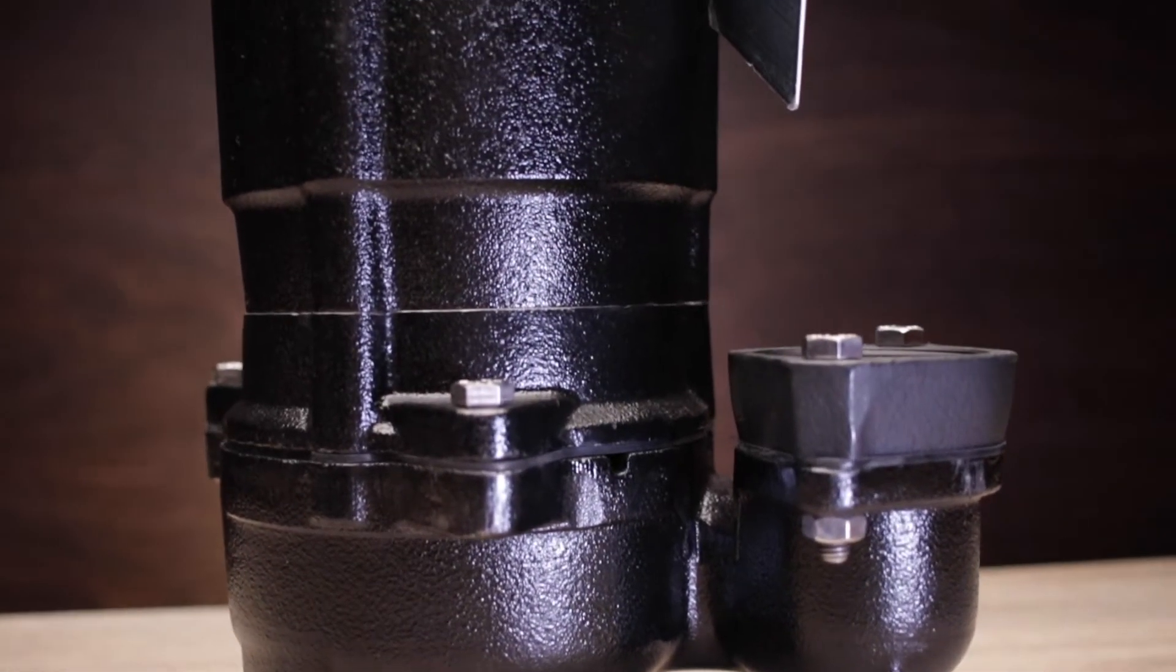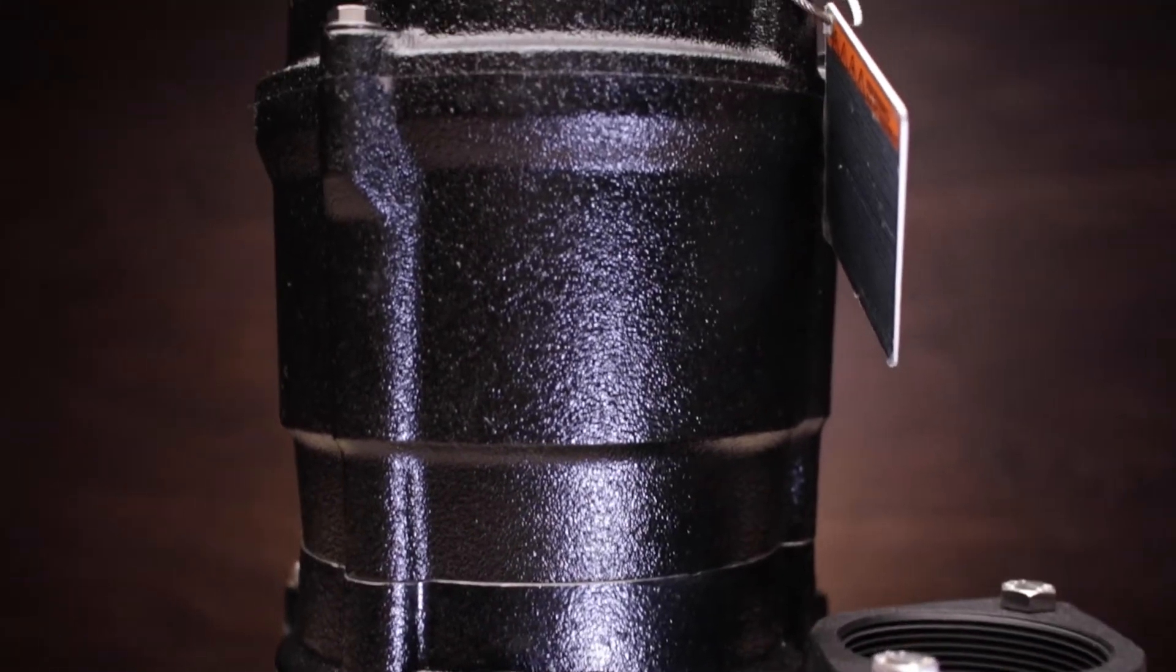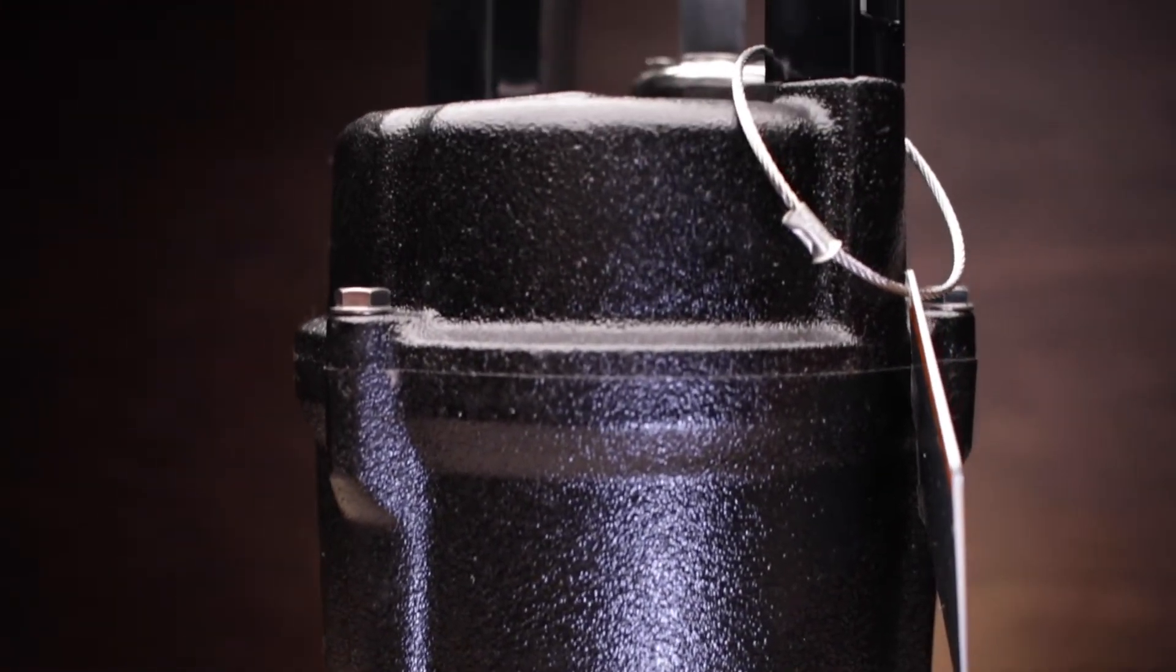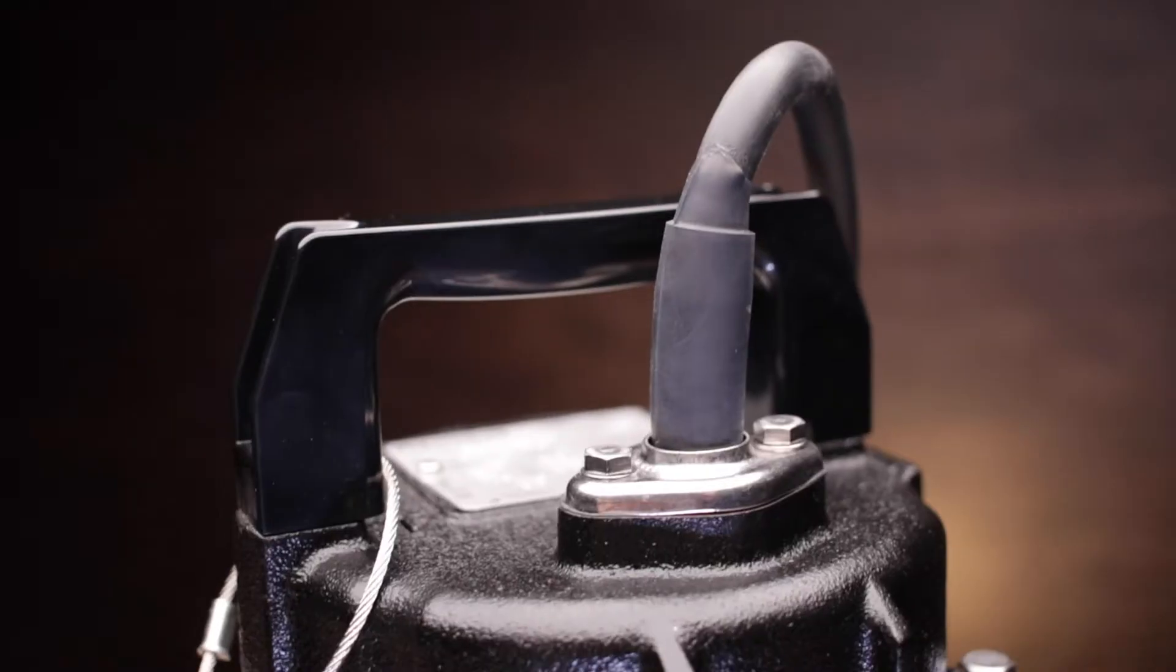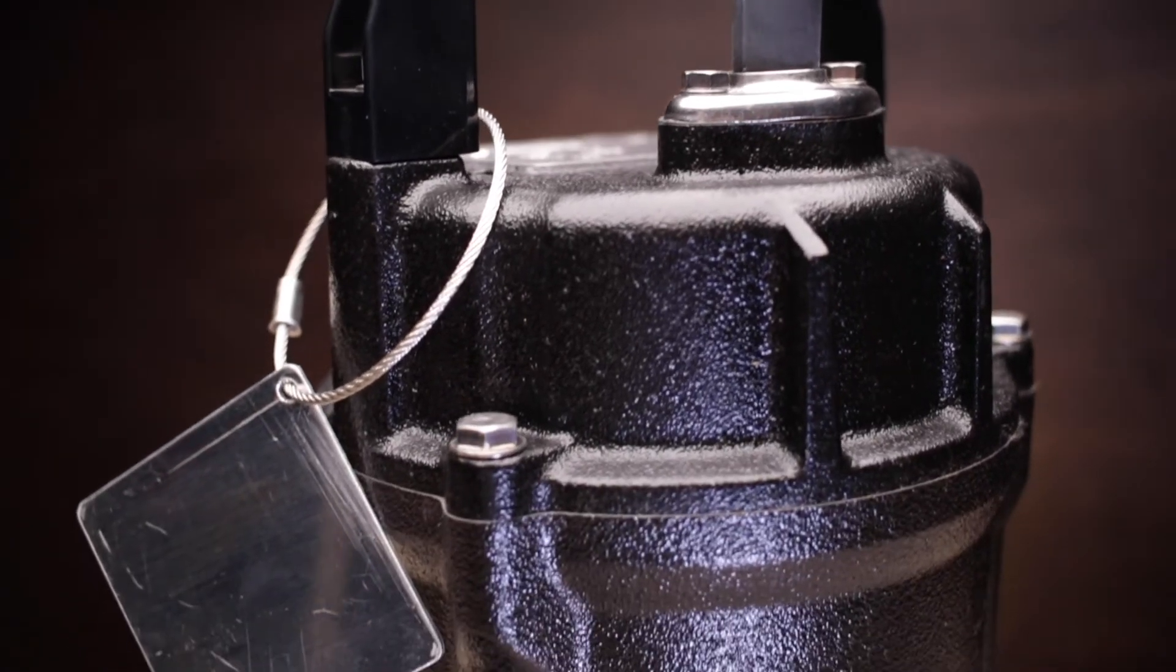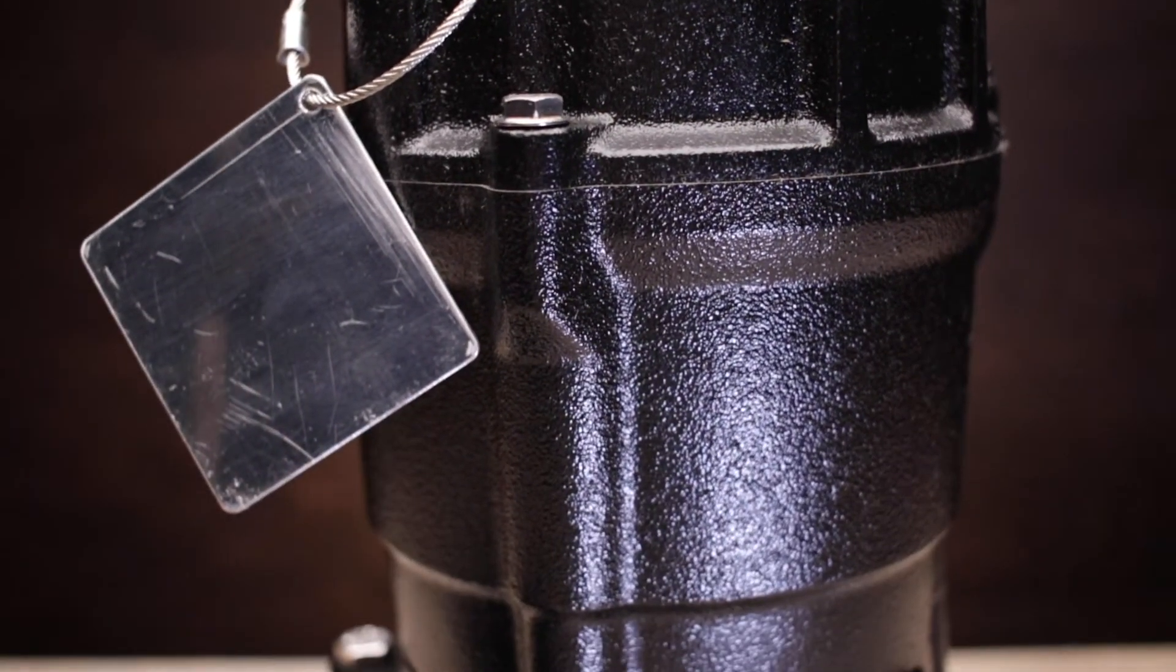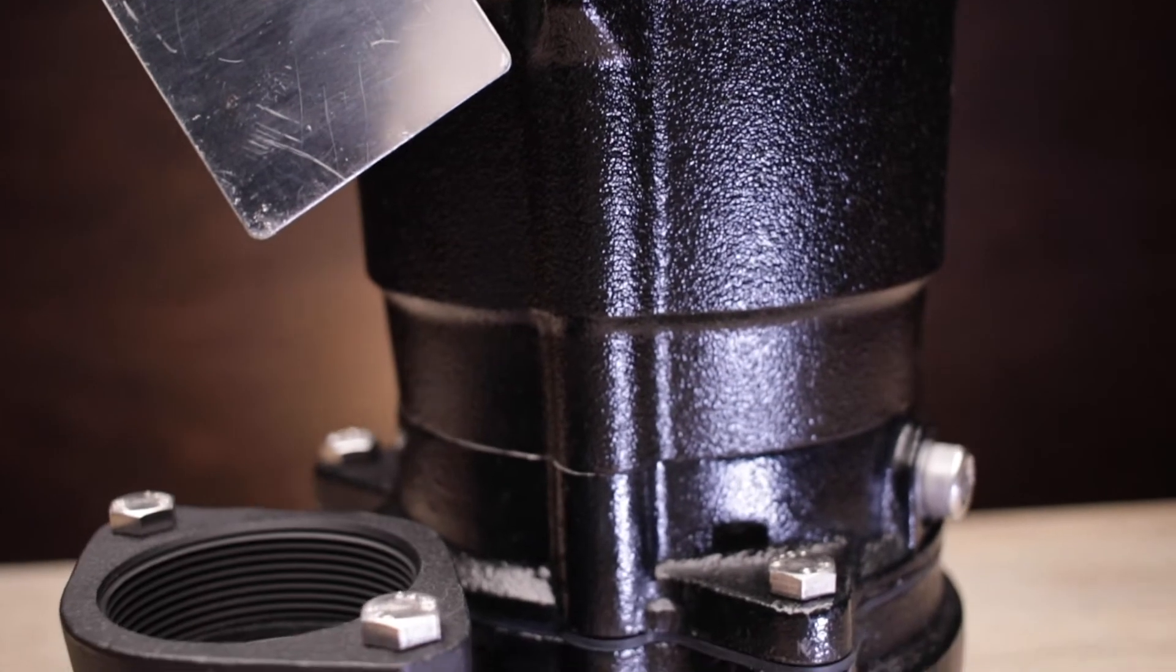The 50 UT 2.4 S is a 1.5 horsepower, 115 volt single phase cast iron submersible sewage pump that draws only 5.7 amps, extremely low. The 50 UT 2.4 S comes with a 2 inch discharge, 20-foot power cord and weighs in at a beefy 31 pounds.